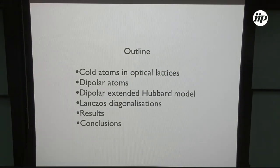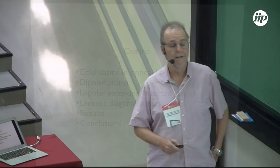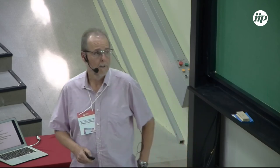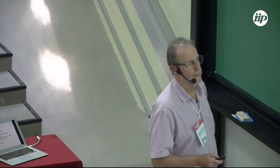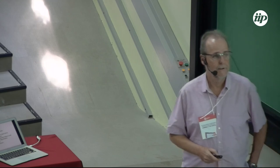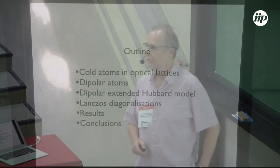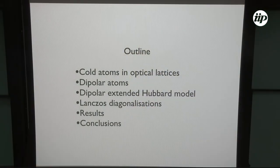The outline: we're going to talk a lot about cold atoms in optical lattices, then mention bipolar atoms, and talk about the bipolar extended Hubbard model. We'll briefly introduce the diagonalization technique we use, and then present results and conclusions.